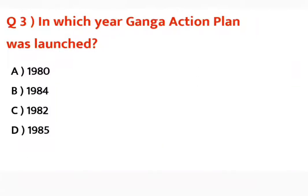Question number three: In which year was the Ganga action plan launched? Options are 1980, 1984, 1982. Correct answer is 1985. It was launched in 1985.